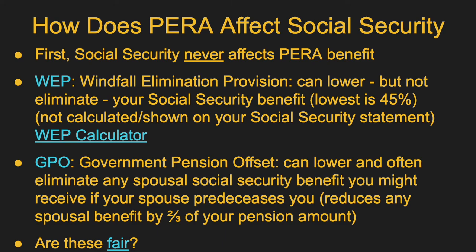There's a second provision — the Government Pension Offset, or GPO — which applies if you have a spouse who is getting Social Security and they pre-decease you. You might qualify for a spousal benefit if their Social Security is higher than yours. However, the GPO will likely, if you have a fairly decent PERA benefit, wipe that out completely. Unlike the WEP, the GPO can eliminate the benefit entirely. You take two-thirds of your PERA benefit, subtract that from your spouse's Social Security, and if the result is less than zero, you get nothing. I have some links there for you to explore those more, and a blog post I wrote trying to explain why this is the way it is.